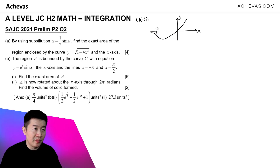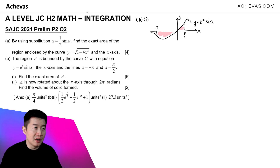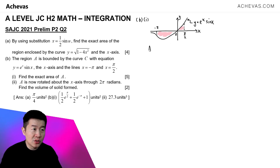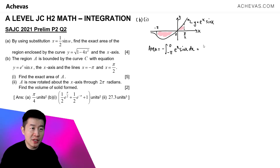We are concerned with the part from x = -π all the way until x = π/2. The region bounded by y = eˣsin(x) includes a region below the x-axis and a region above it. Because there is a region below the x-axis, integrating from -π to 0 will give a negative area. So we separate the two regions: we add a negative sign in front of the integral from -π to 0 of eˣsin(x), then add the integral from 0 to π/2 of eˣsin(x).